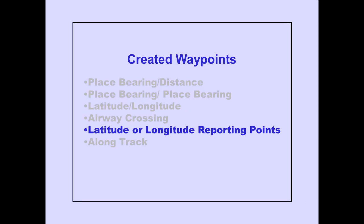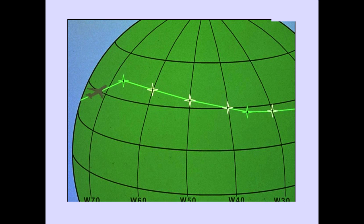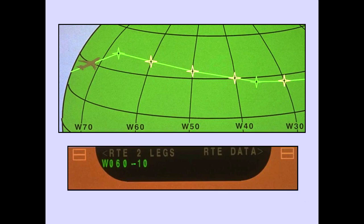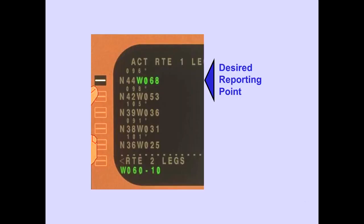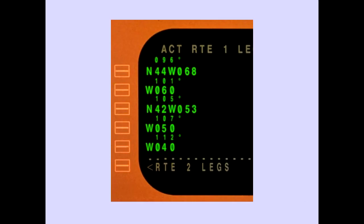Let's now look at latitude or longitude reporting points. In this example, the longitude of west 060 and intervals of 10 degrees are used to create the reporting points. The desired reporting points are created by line-selecting the scratchpad entry over any waypoint prior to the first reporting point. The FMS places the waypoints in the proper sequence, and the newly created reporting points are automatically displayed in the correct order to the destination.